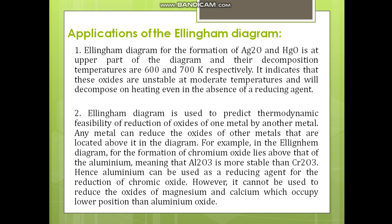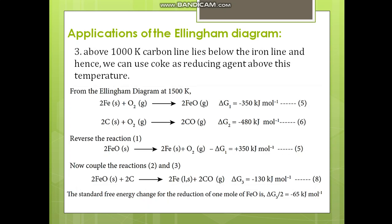At the same time, to reduce magnesium and calcium oxides, which occupy a lower position than aluminium oxide on the diagram, aluminium cannot be used as a reducing agent. The third application: above 1000 Kelvin, the carbon line lies below the iron line, and hence we can use coke as a reducing agent.